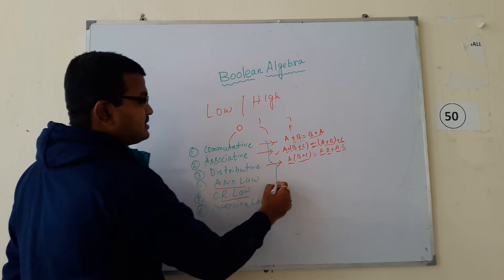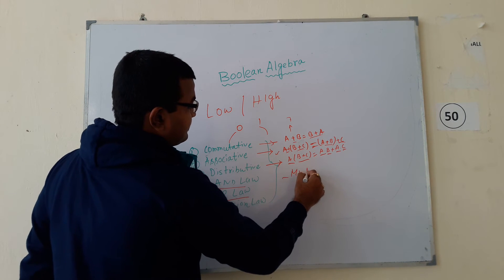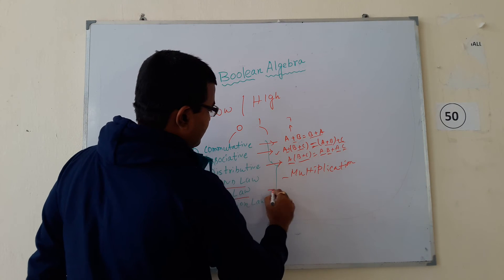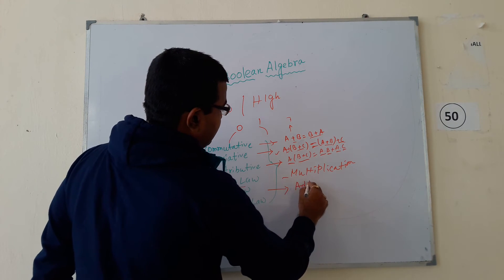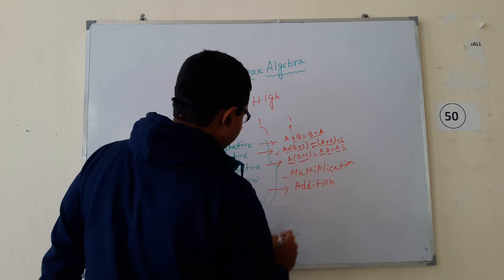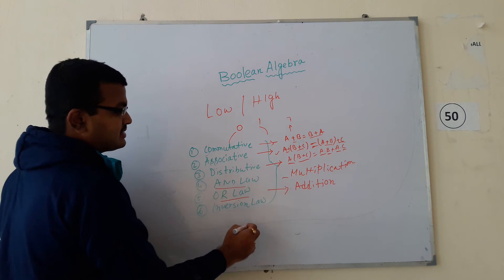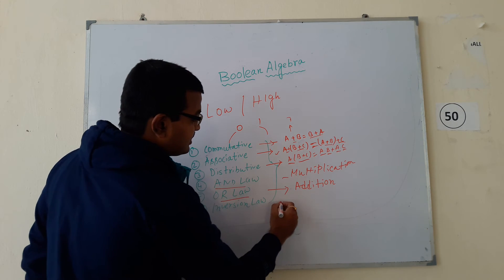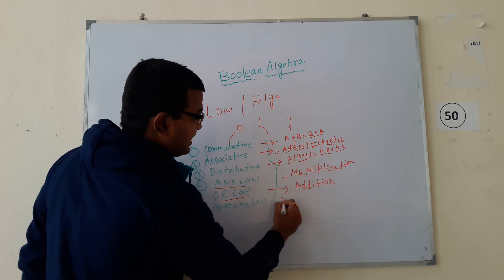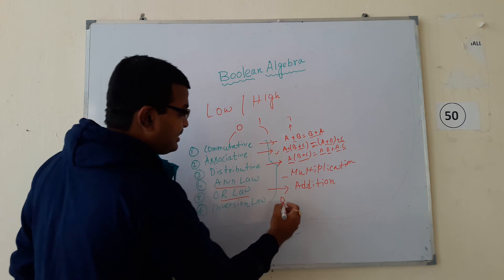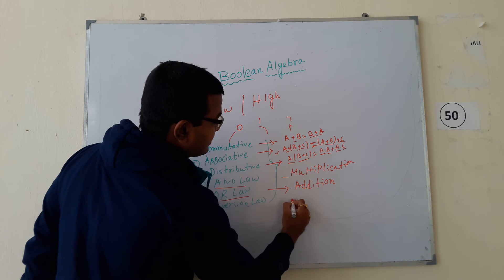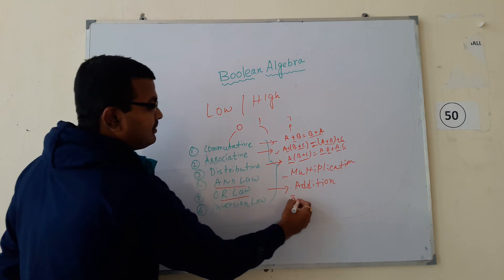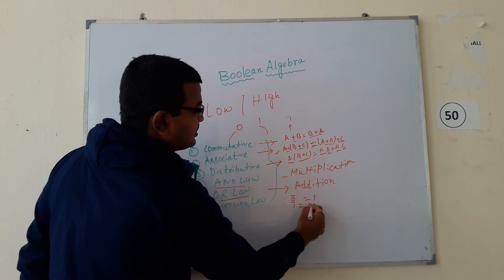In AND law and OR law, these operations we discussed previously. AND means multiplication. OR means addition. The next law is inversion. Inversion means nothing but a complement. Suppose if 0 is there, its complement will be treated as 1. So 0 complement means 1, and 1 complement means 0.